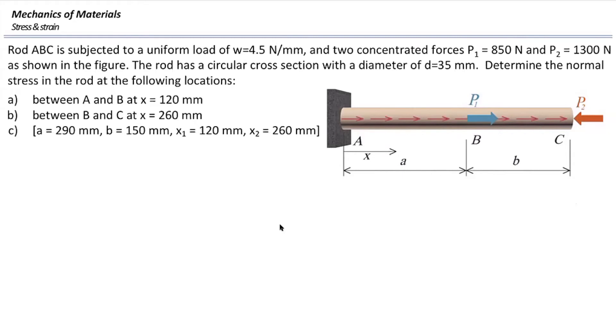I guess the first part, which is determining the area, is pretty simple. This is a rod with a diameter of 35 millimeters. The area is pi over 4 diameter squared, and I can calculate the area here.